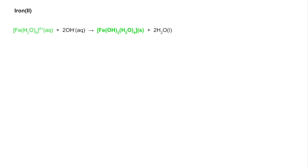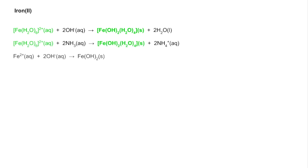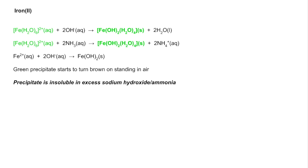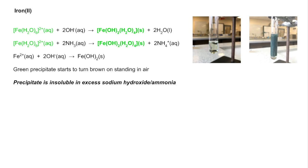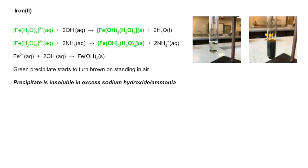Moving on to iron 2+: the precipitation reaction gives a green precipitate, and we need to know that the green precipitate starts to go brown when left standing in air, due to oxidation of iron 2+ to iron 3+. The precipitate is insoluble in both sodium hydroxide and aqueous ammonia. Starting with a pale green solution, you get a green solid precipitate which then begins to show a browny colour at the top.